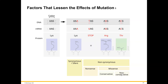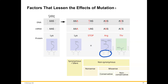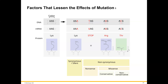Conservative versus non-conservative missense mutations: if the new amino acid has a similar side chain to the original, it's conservative. If the amino acid has completely different properties — for example, a polar versus non-polar amino acid — it's called non-conservative.